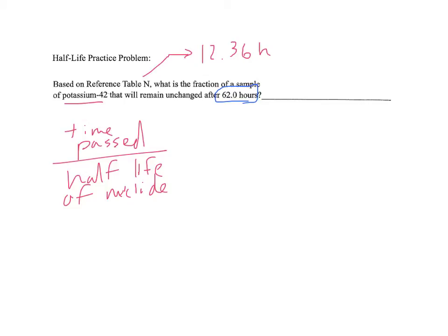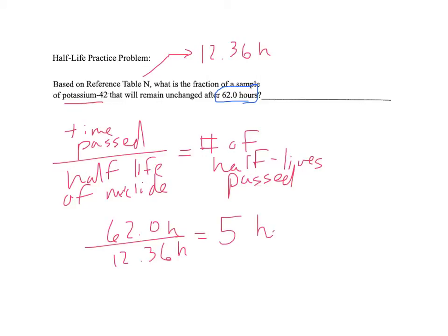And that's going to give us the number of half-lives past. Now, let's take a look at that. We take 62.0 hours, divide that by 12.36 hours, and you get approximately five half-lives.